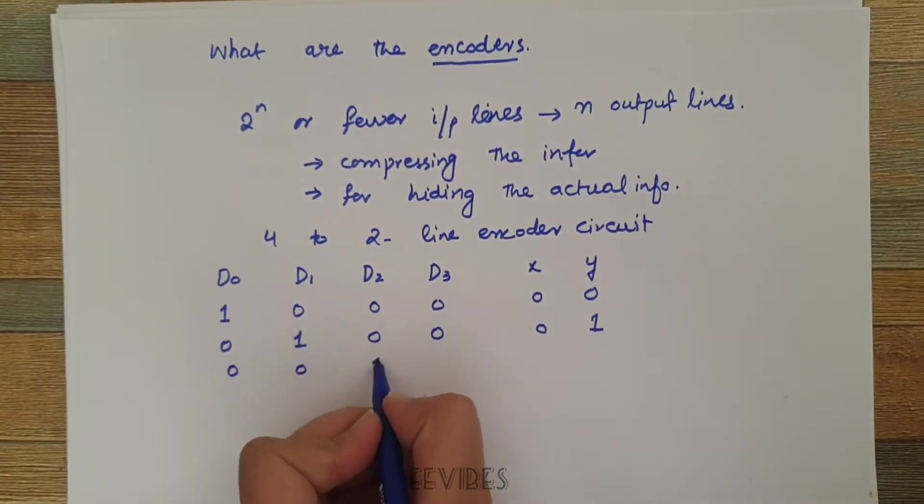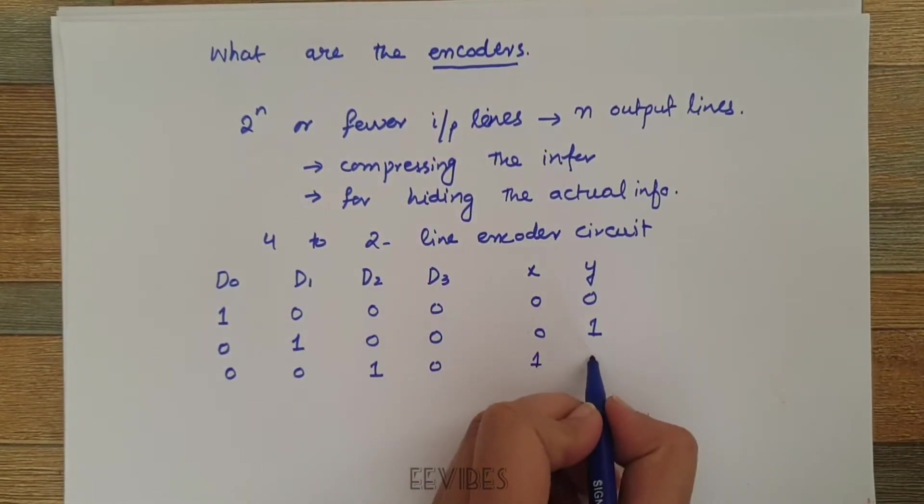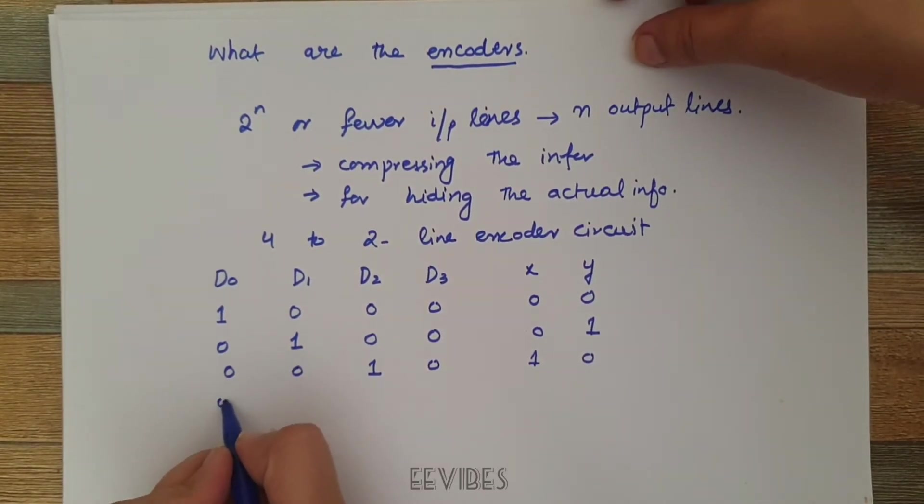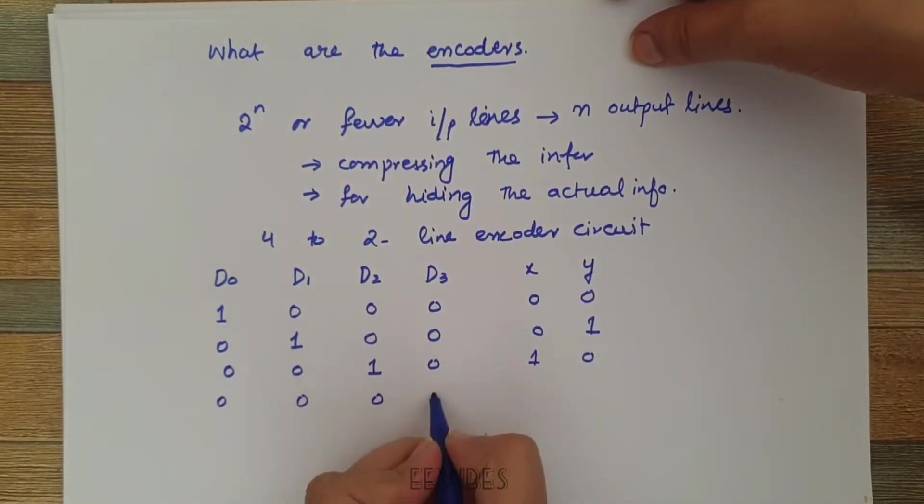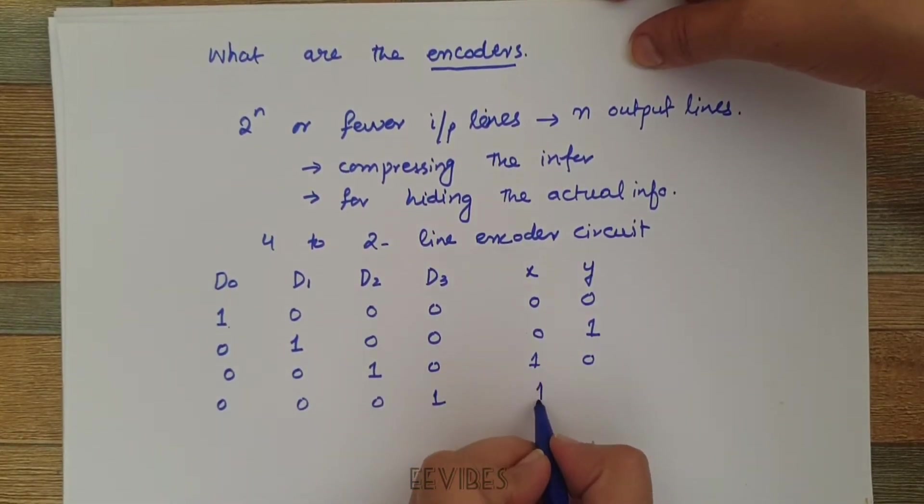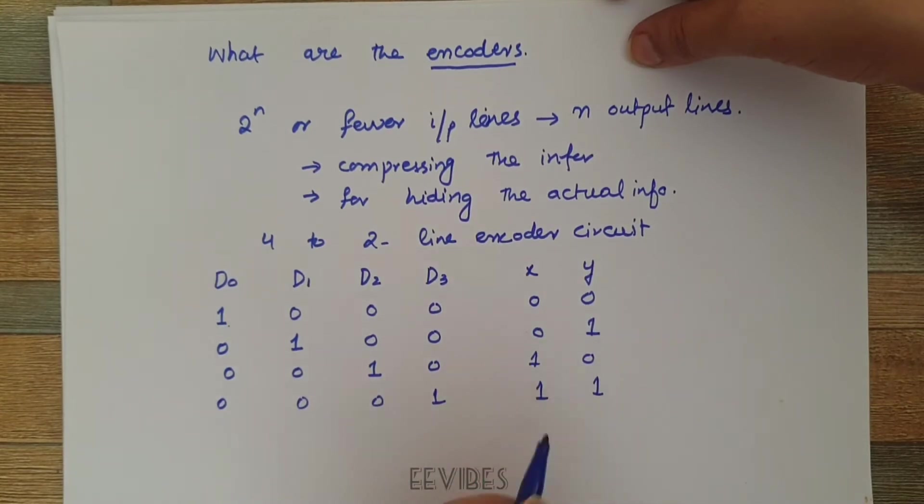You can make only one input line equal to 1 at a time. So by keeping one input line equal to 1 at a time you can generate the corresponding output lines.